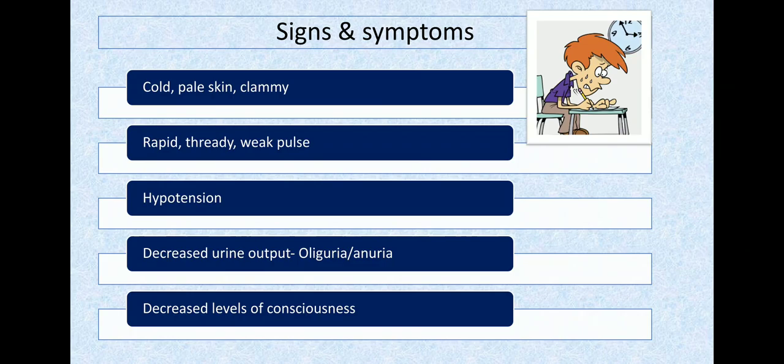The patient has cool extremities and decreased urine output. Cutaneous blood flow is less, so cold and pale skin, but it's clammy with excessive sweating due to epinephrine release and sympathetic stimulation. For example, a student caught cheating in viva is sweating all over due to sympathetic stimulation.